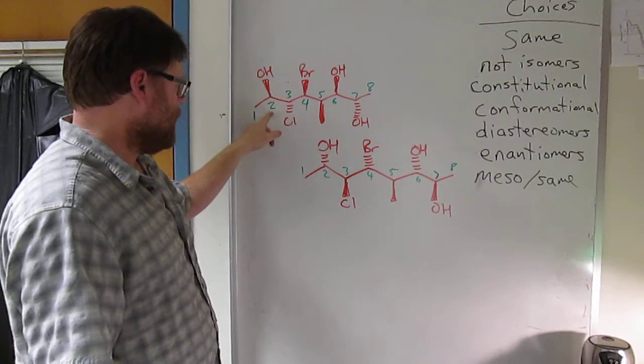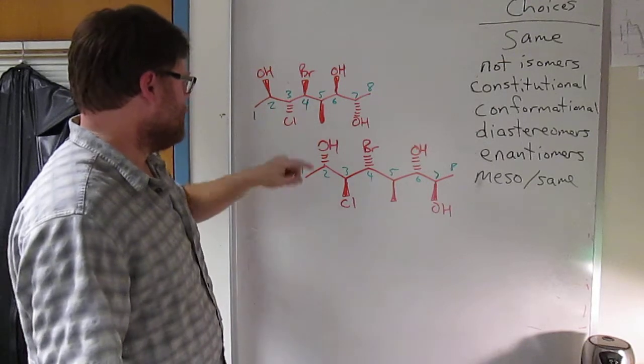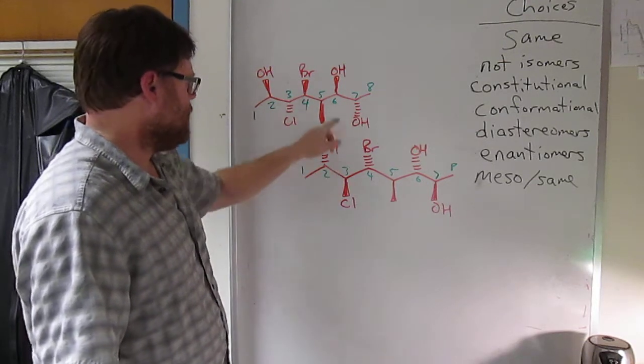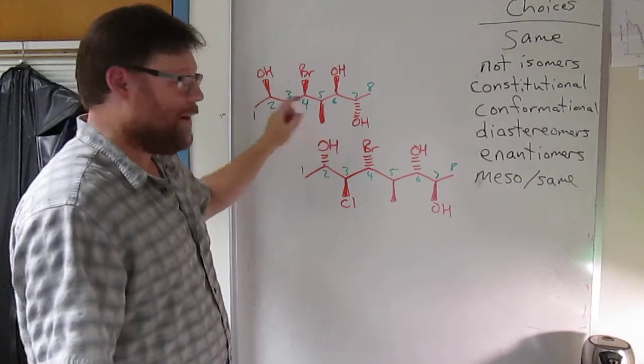So C2 has inverted and what you'll find if you look through: C2 inverts, C3 inverts, C4 inverts, C6 inverts and C7 inverts, and C5 does not invert.